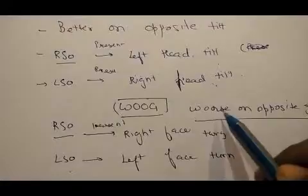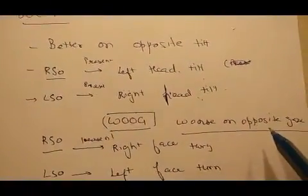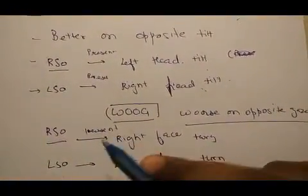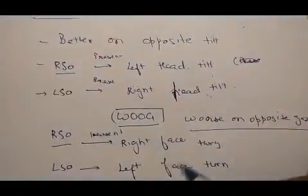The second mnemonic is WOOG, which means 'worse on opposite gaze'. Right superior oblique palsy would be worse on left face turn and better on right face turn.